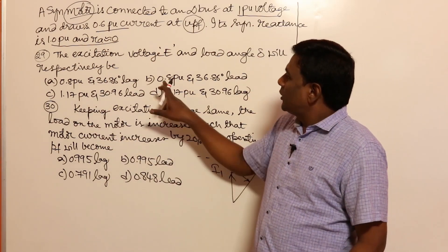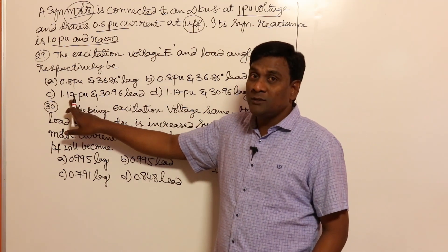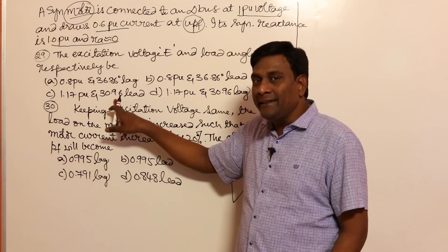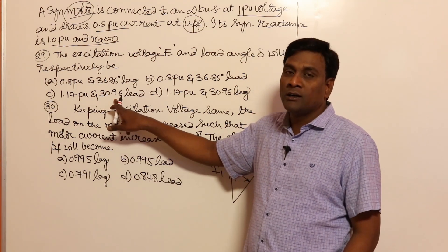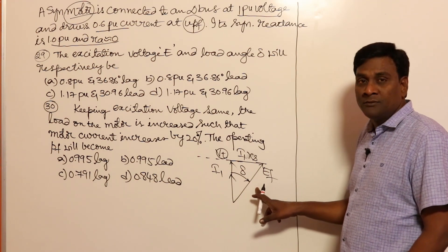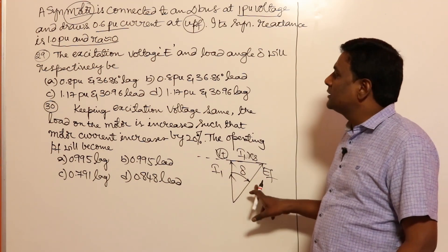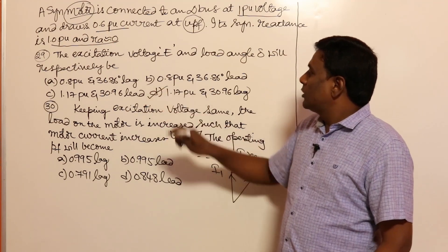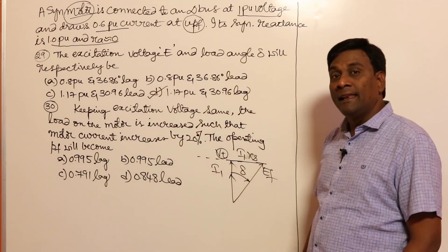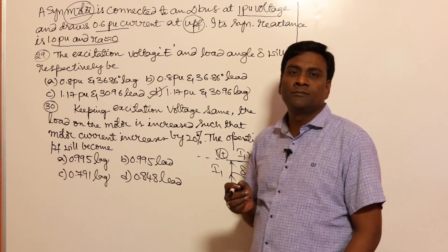1.17 is more than one, so it can be the right answer. But 30.96 lead is wrong because in a motor, EF compulsorily should lag with respect to VT. So 1.17 at 30.96 lag — EF should lag with respect to VT. Problem solved, two marks.